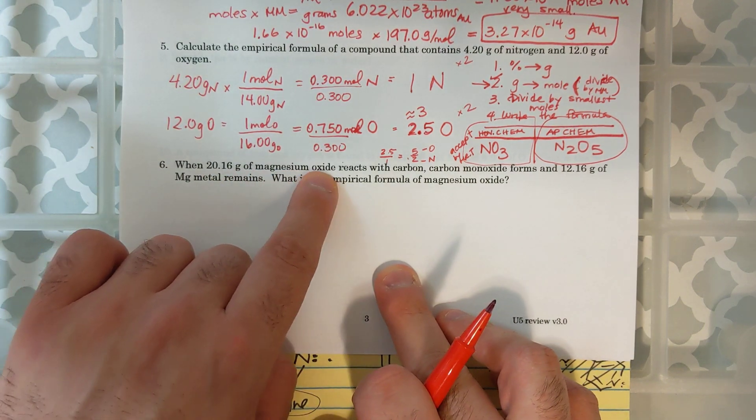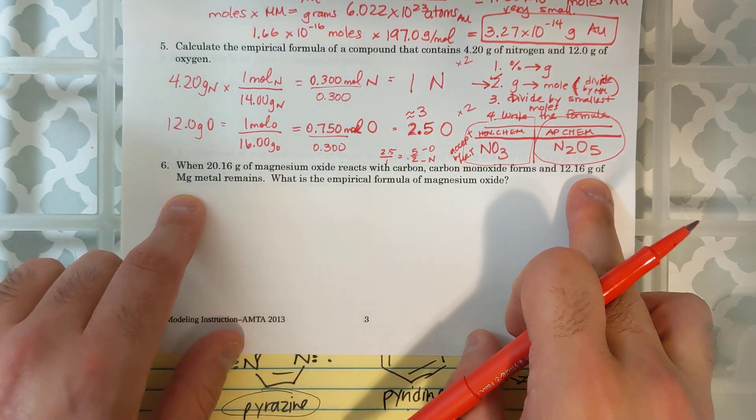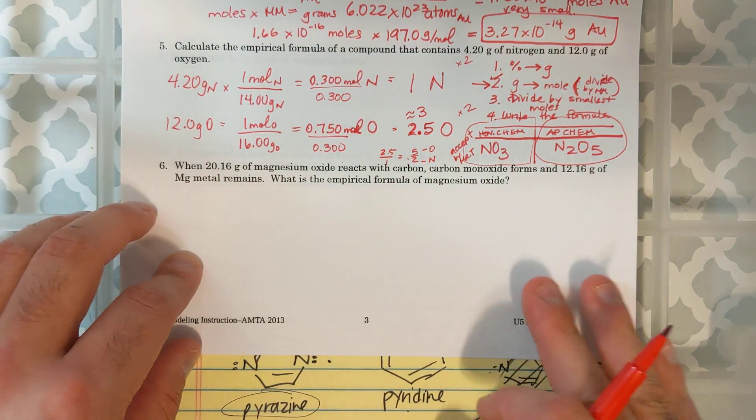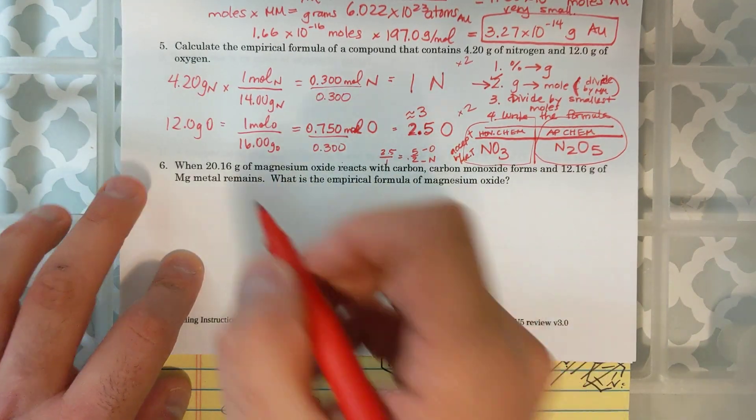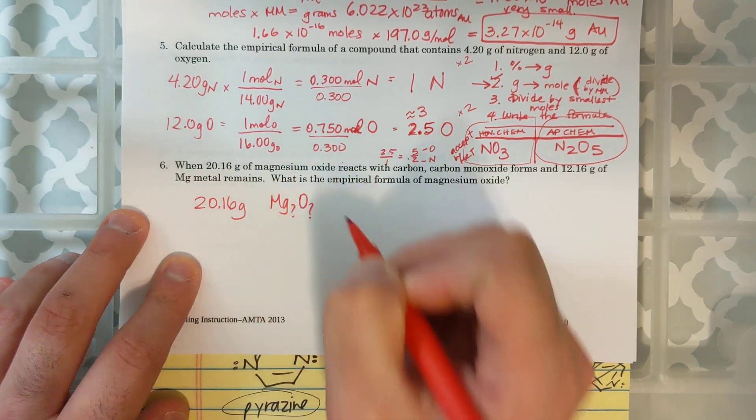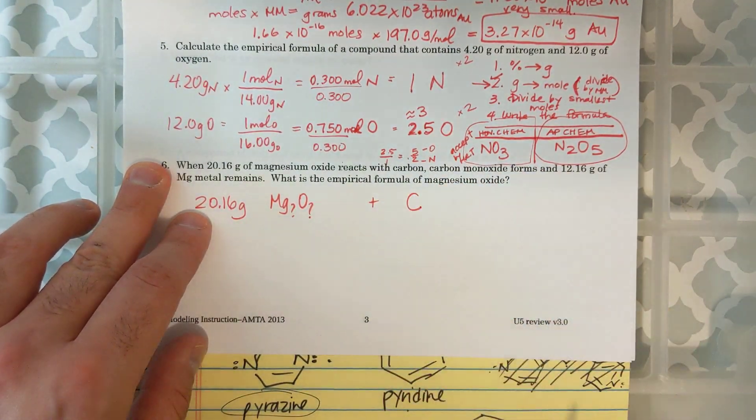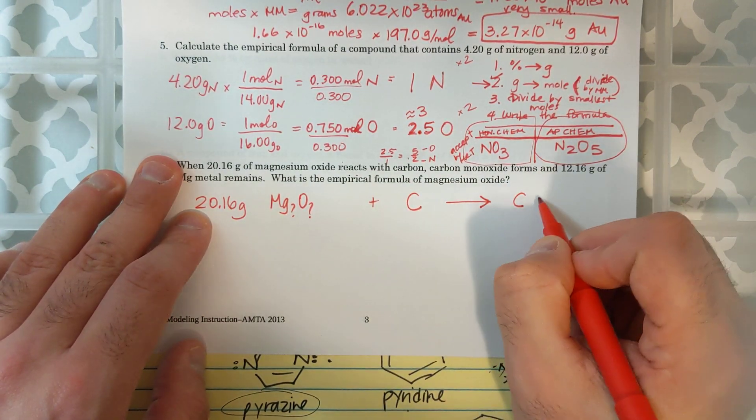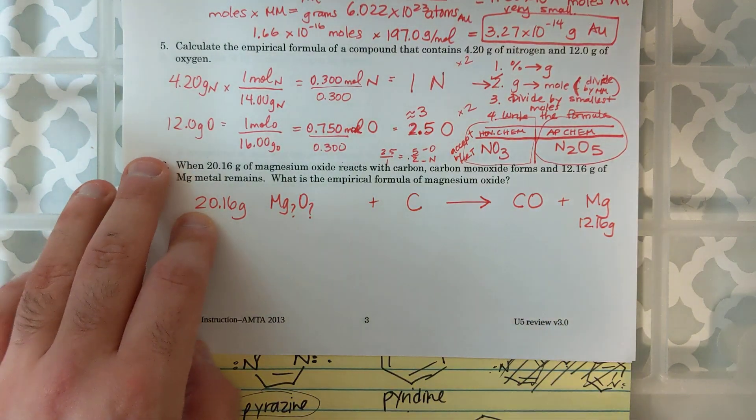When 20.16 grams of magnesium oxide reacts with carbon, carbon monoxide forms, and 12.16 grams of magnesium metal remains. What is the empirical formula of magnesium oxide? Oh, my. There is a lot here. So, I have a magnesium oxide. I have 20.16 grams of this MgO compound. I don't know. I'm going to put question marks. And it reacts with carbon. And I get carbon monoxide and magnesium. And I have 12.16 grams of magnesium that comes out.